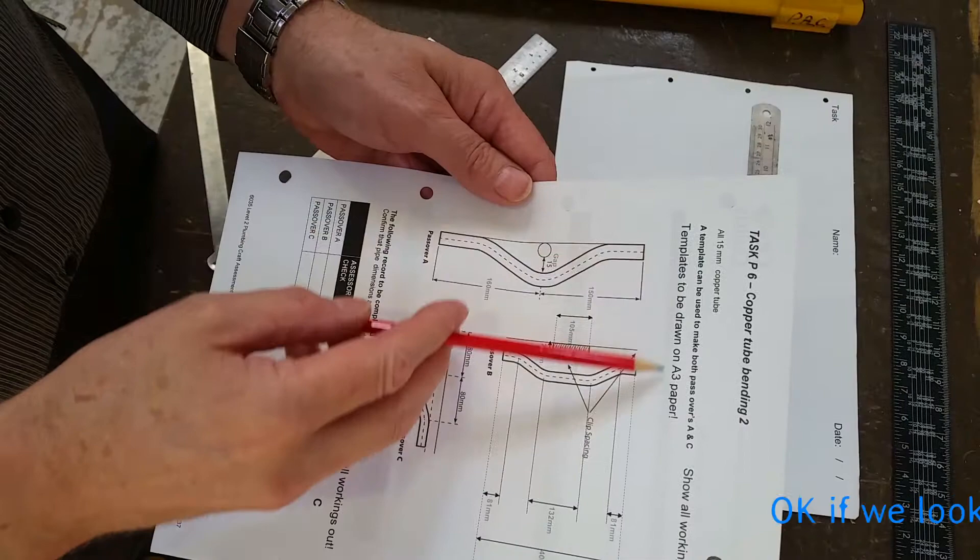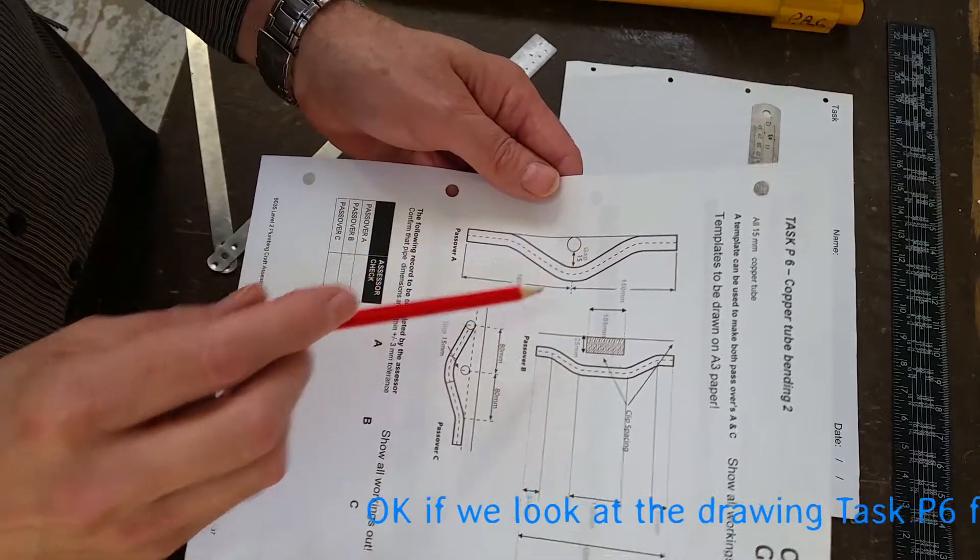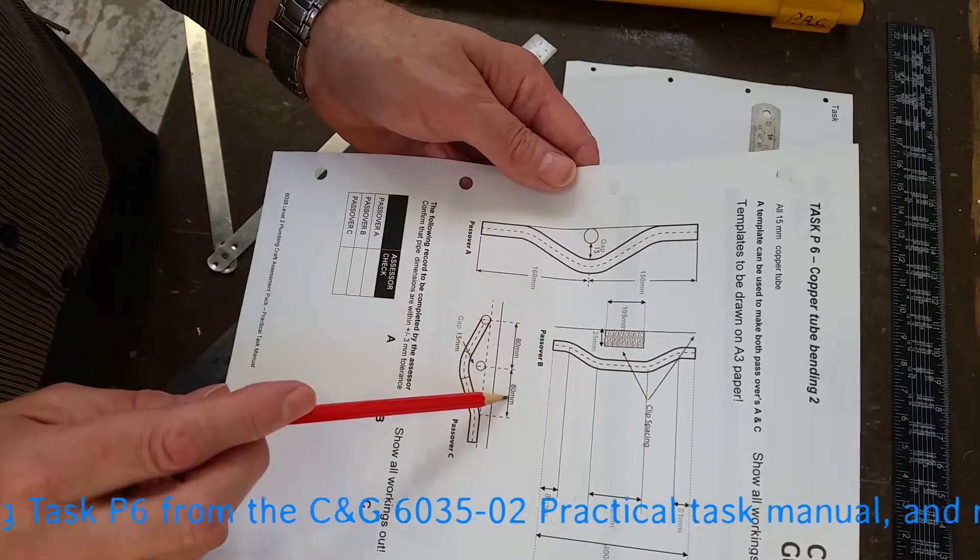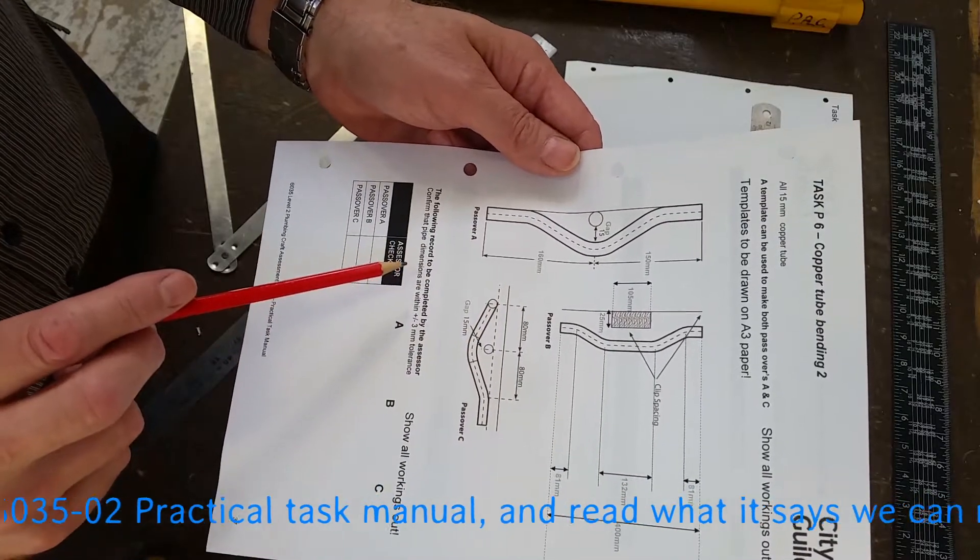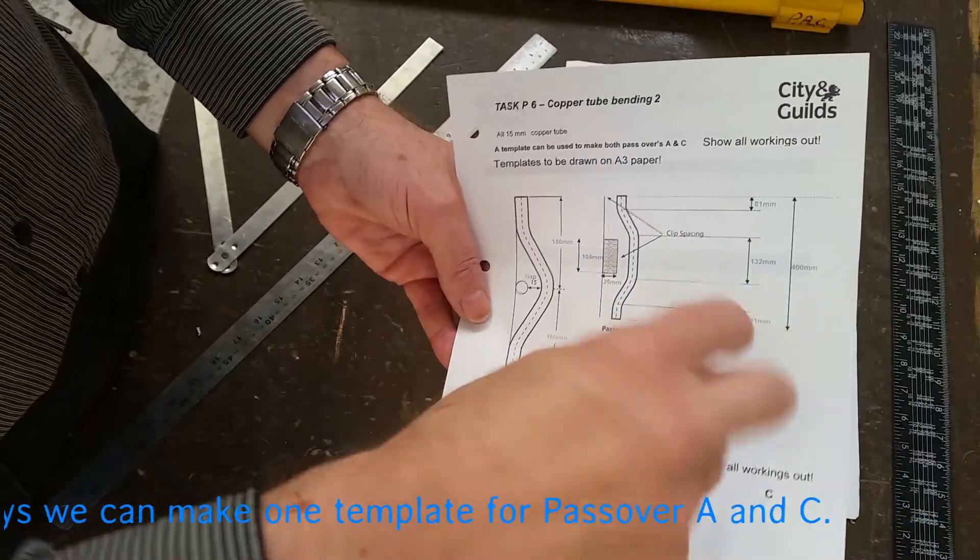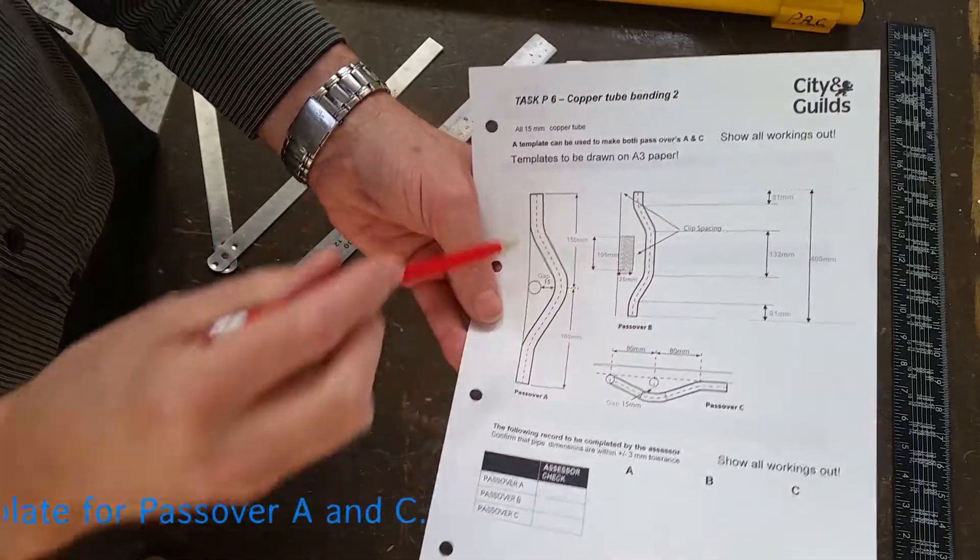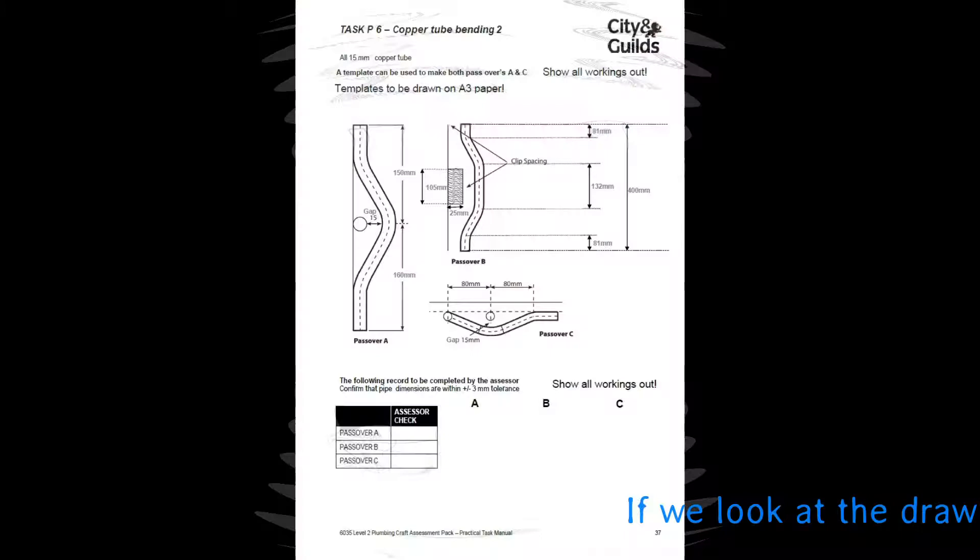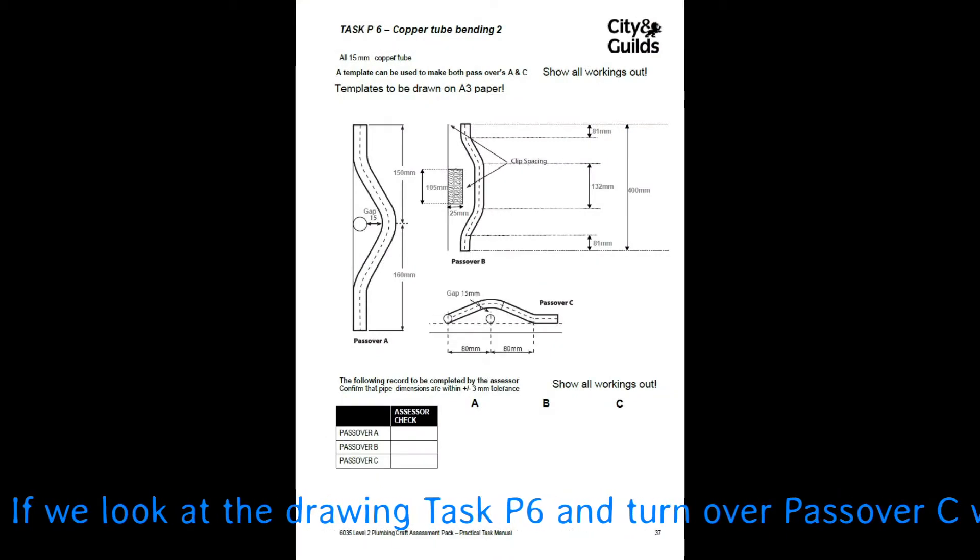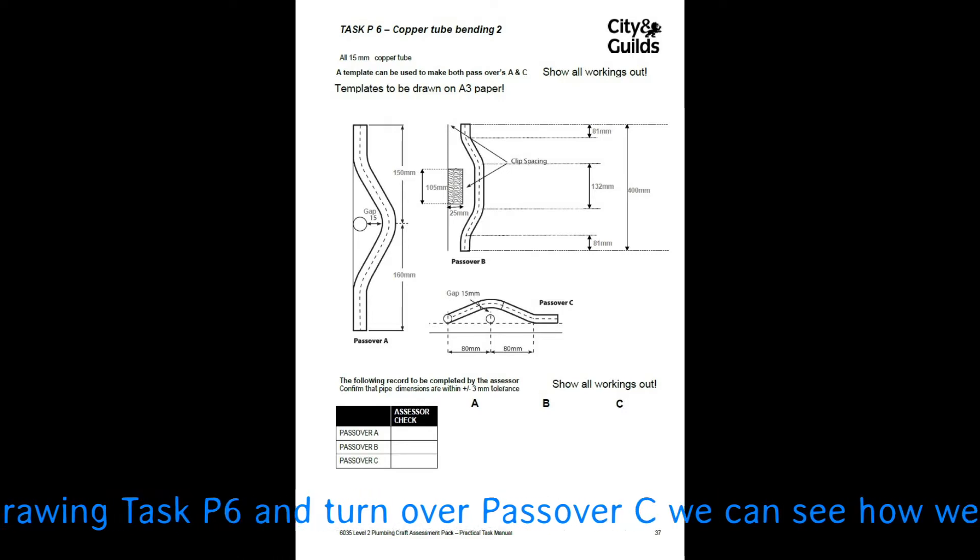Better to have two rulers. If we can see on the Task P6 we've got three drawings there and we can use one template to do Passover A and Passover C. If we turn Passover C over, mirror image it, it will lay exactly on top of Passover A. Therefore we can use one drawing to bend two pipes, two different passovers.